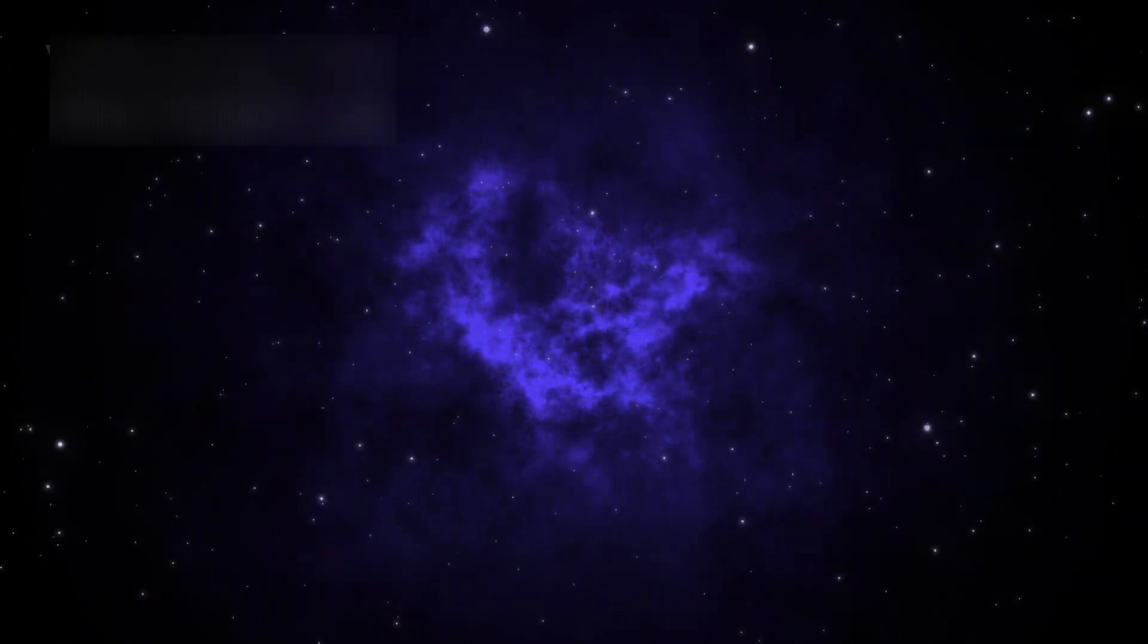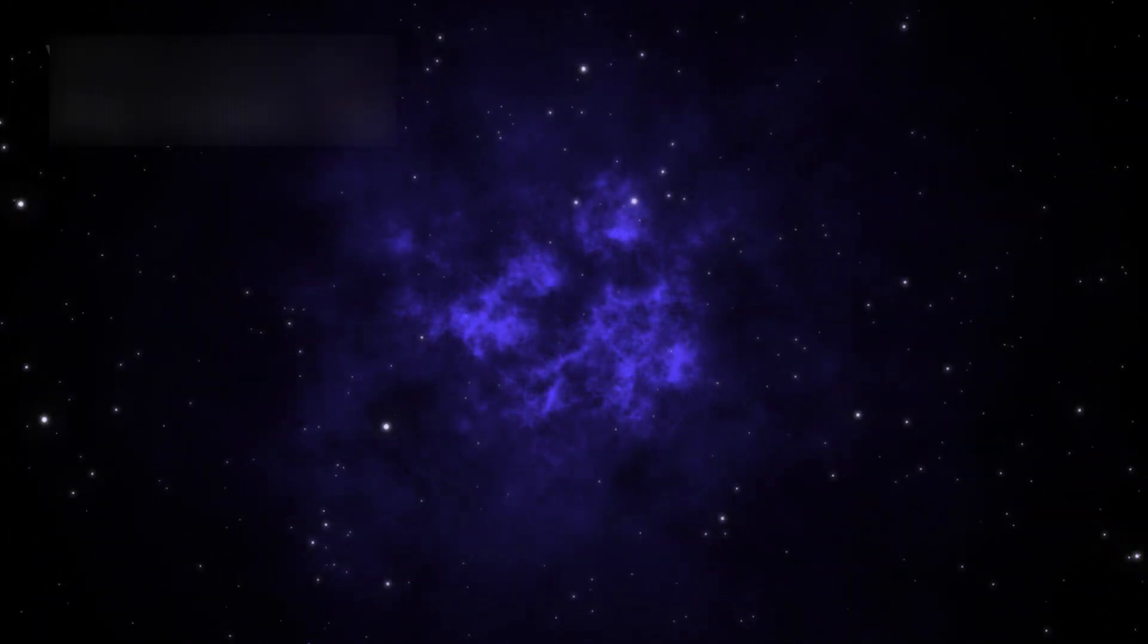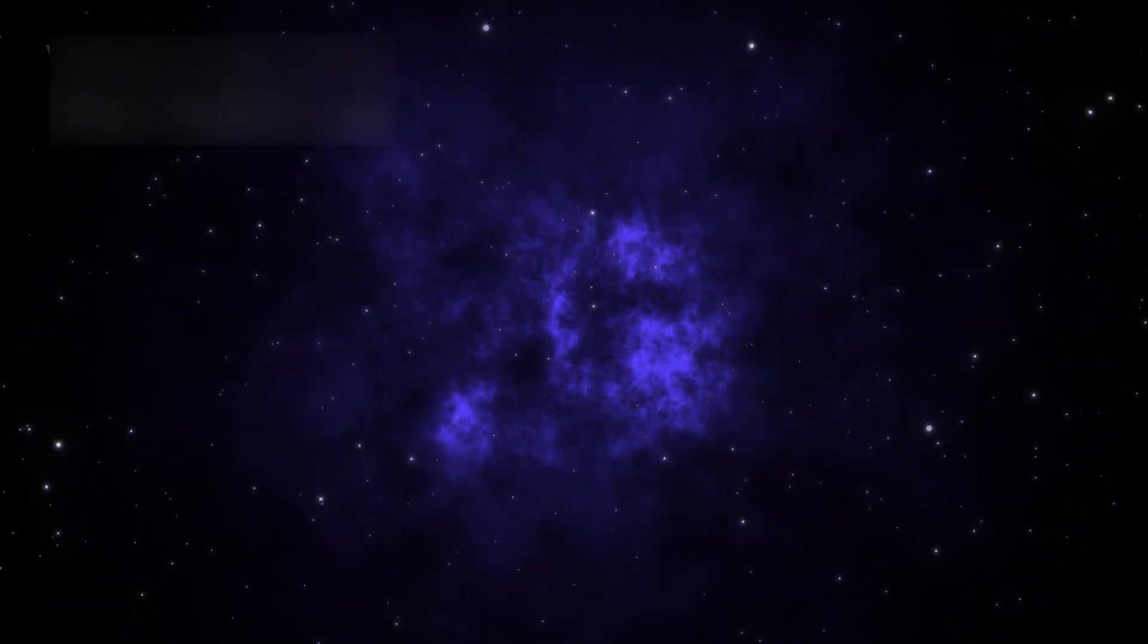Recently, JWST focused on a distant and mysterious world, K-218b. This exoplanet resides in the constellation Leo, approximately 120 light-years from Earth. At first glance, it might appear to be just another distant planet, but detailed observations revealed something extraordinary.